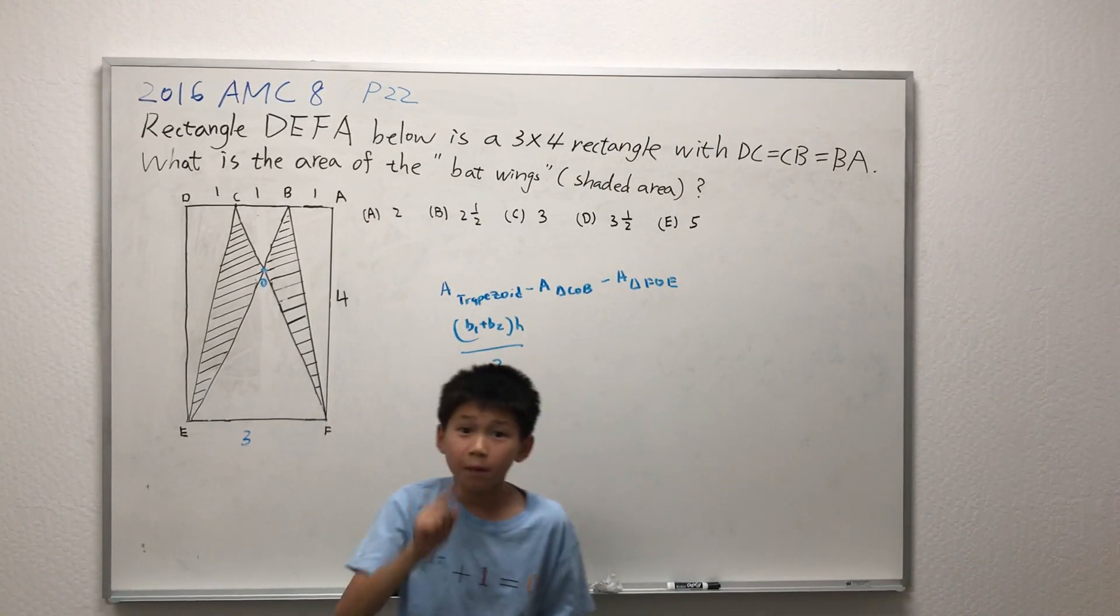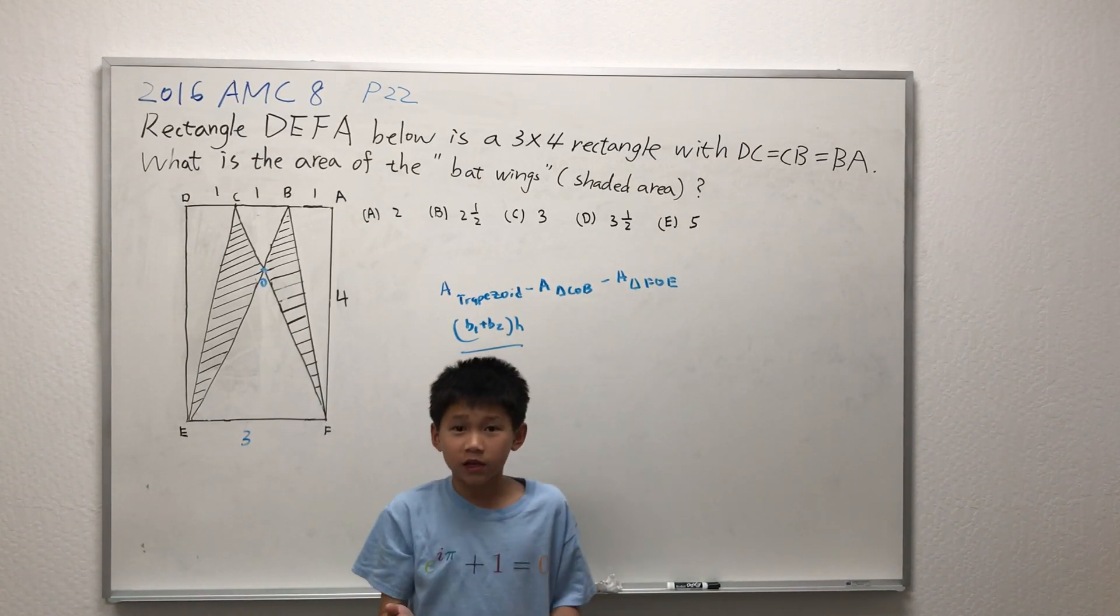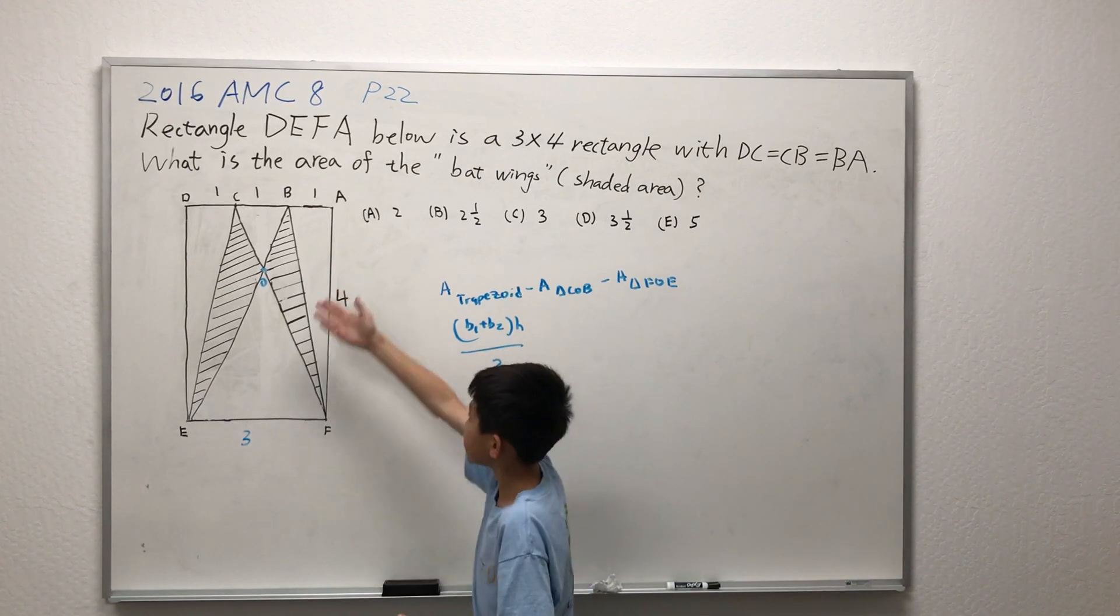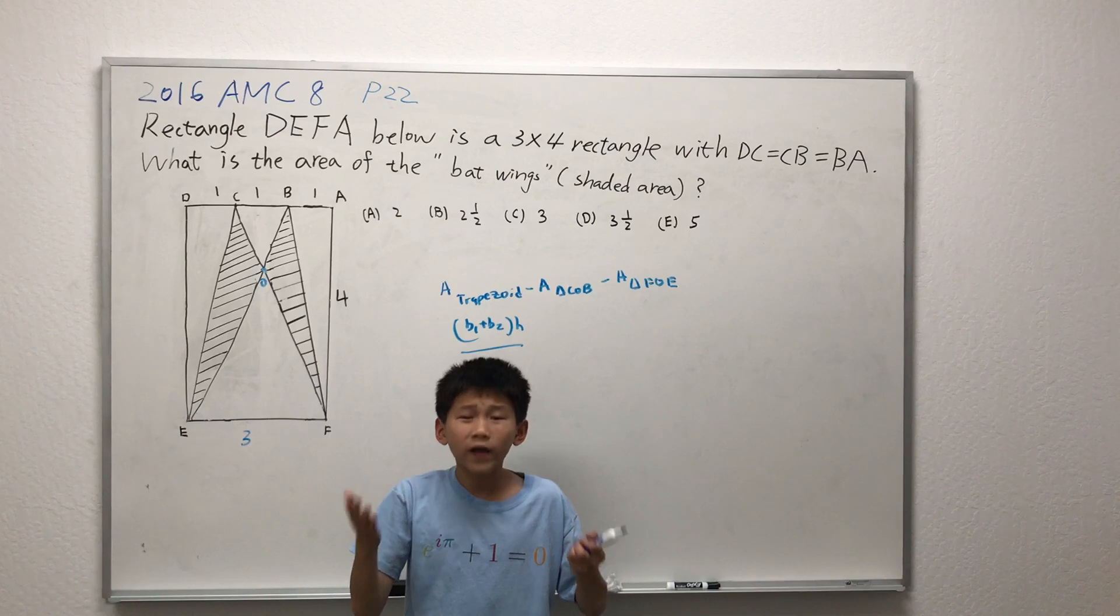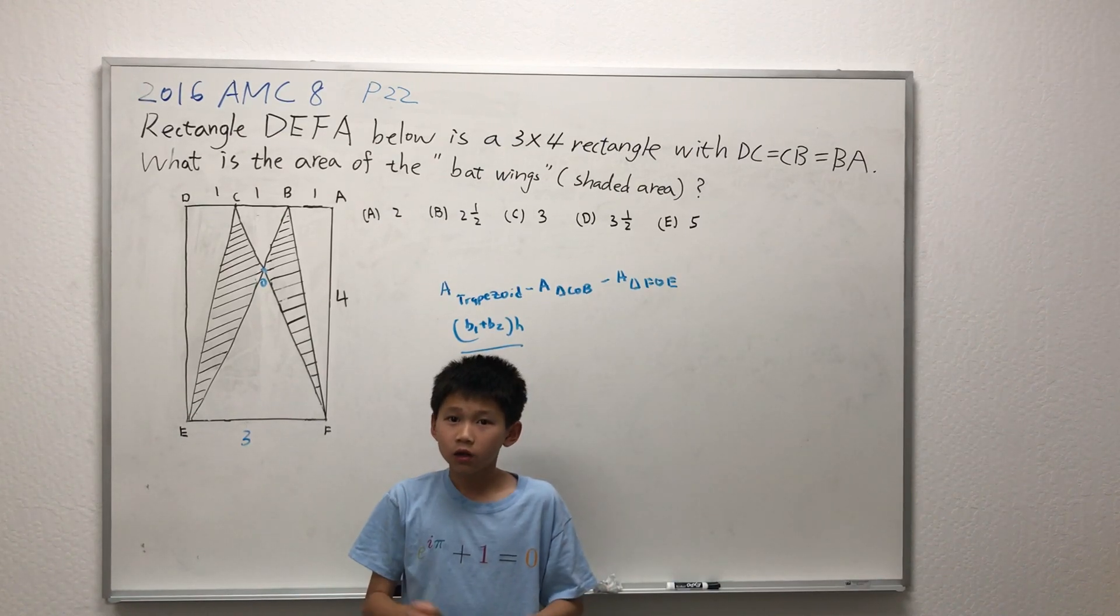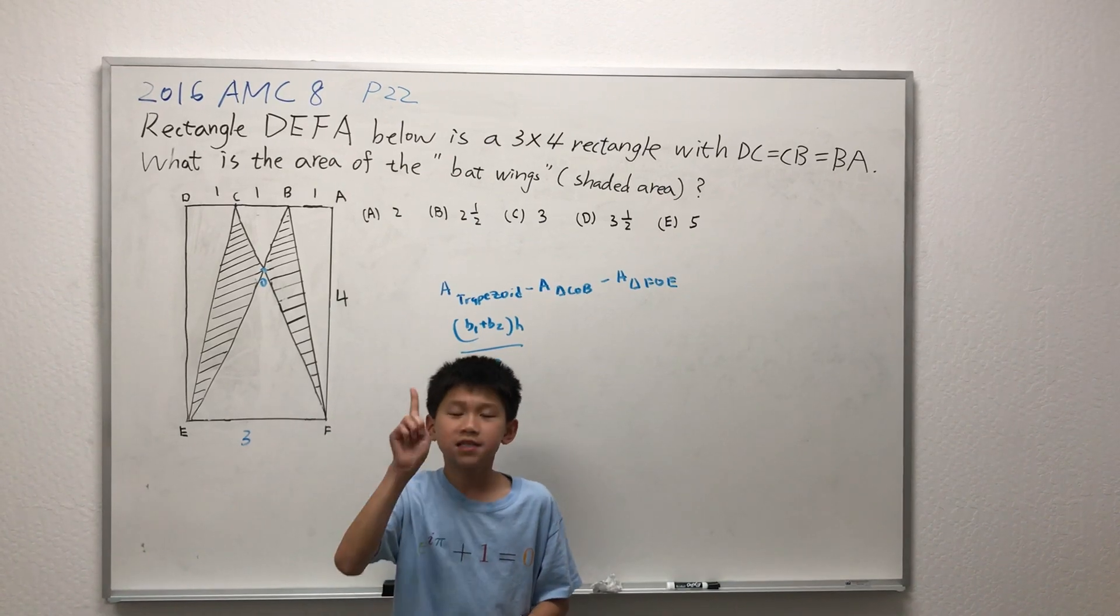Now the tricky part is to find the area of the triangles COB and FOE. We have the bases for both of them, but we do not know whatsoever what the heights are. Aha! This is when our secret weapon comes in. Similar triangles.